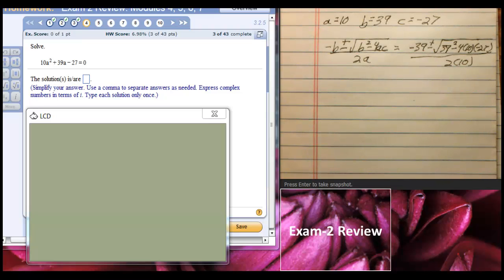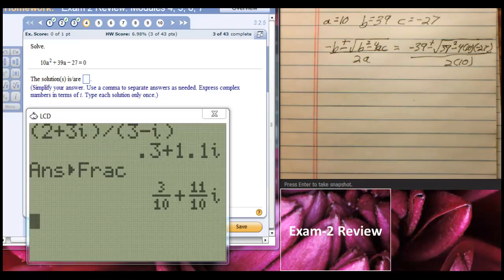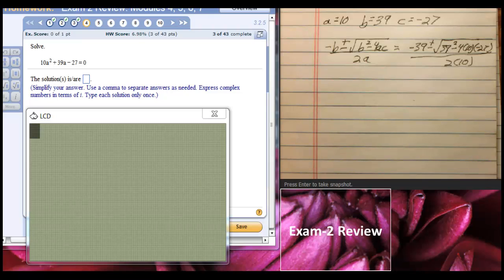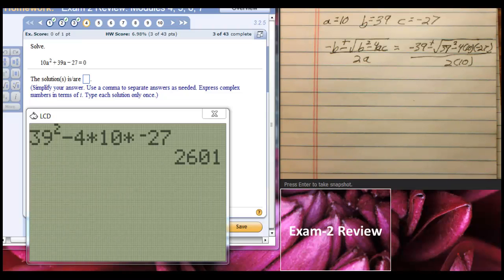Okay, now comes the trusty calculator. We are going to turn it on. There we go. I'm going to clear that. I'm going to say 39 squared minus 4 times 10 times negative 27, and I'm going to say enter. It's 2601.